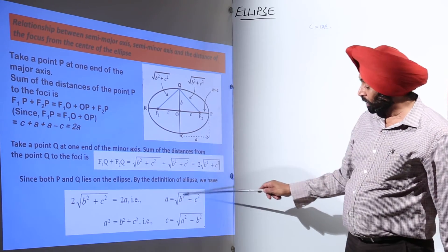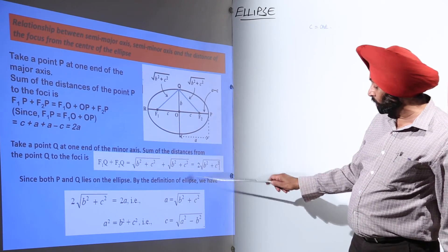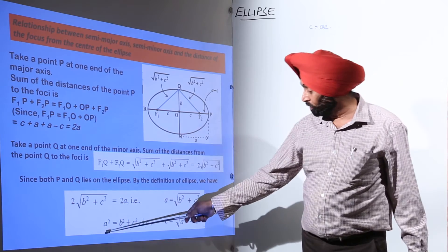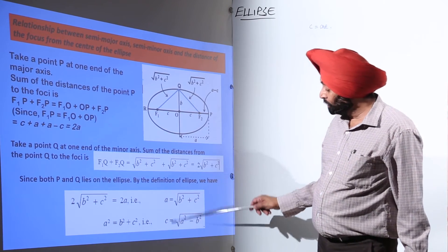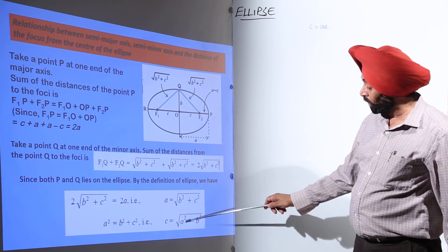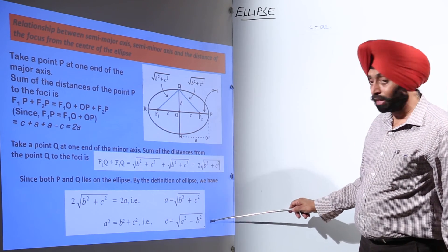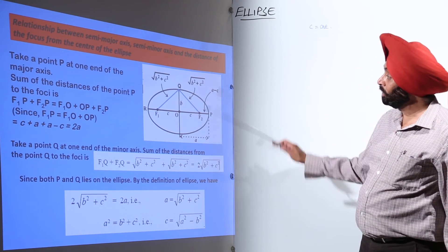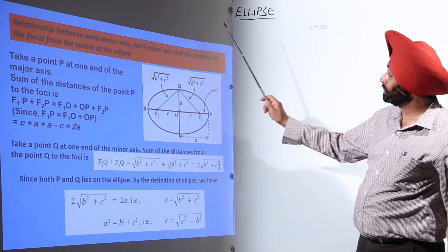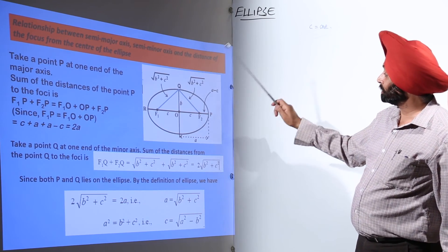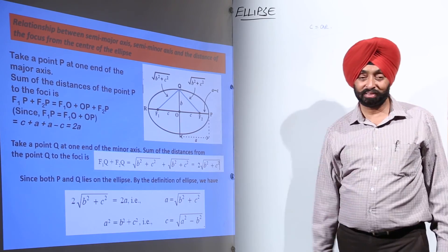Cancelling the factor of 2, we have A is equal to the square root of B squared plus C squared. Squaring both sides, we get A squared equals B squared plus C squared, and therefore C is equal to the square root of A squared minus B squared. So this was the relationship between the semi-major axis, semi-minor axis, and the distance of the focus from the center of the ellipse.